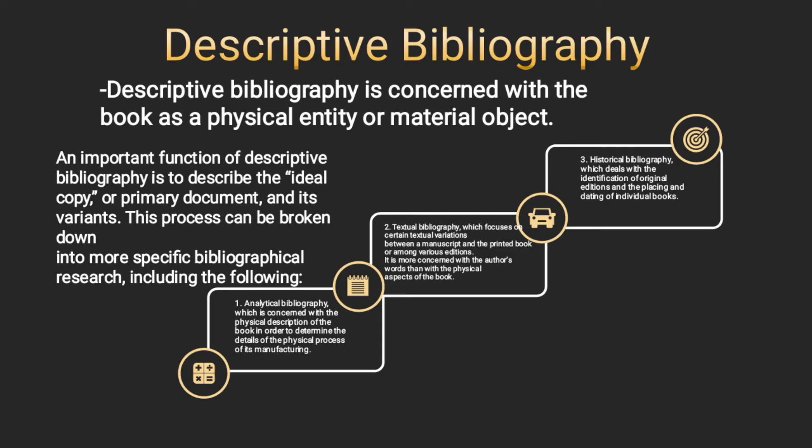This process can be broken down into more specific bibliographical research, including the following. One: analytical bibliography, which is concerned with the physical description of the book in order to determine the details of the physical process of its manufacturing. Two: textual bibliography, which focuses on certain textual variations between a manuscript and the printed book or among various editions — it is more concerned with the author's words than with the physical aspects of the book. Three: historical bibliography, which deals with the identification of original editions and the placing and dating of individual books.